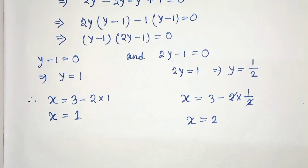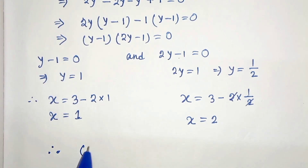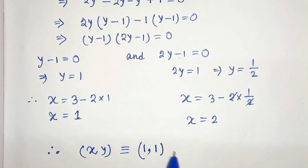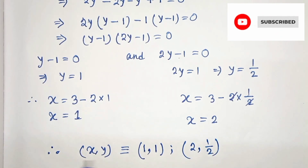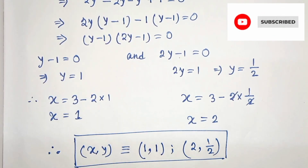Therefore we have a pair of solutions for this set of equations. Our answer is: one solution is x equals 1 and y equals 1, and another solution is x equals 2 and y equals 1/2. This is our solution. Thanks for watching.